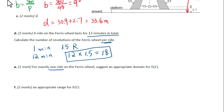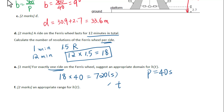For exactly 1 ride on the ferris wheel, suggest an appropriate domain of h of t. One ride is 18 revolutions. Since the period equals 40 seconds, meaning 1 revolution takes 40 seconds, 18 revolutions will take 720 seconds. So the domain of h of t is t greater than or equal to 0, less than or equal to 720 seconds.